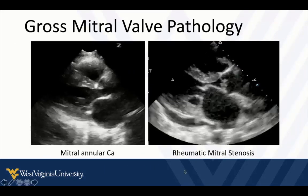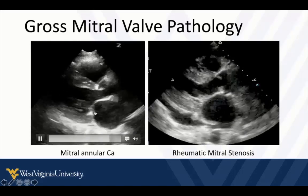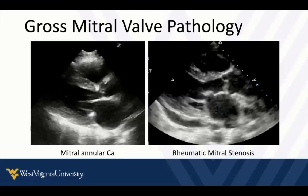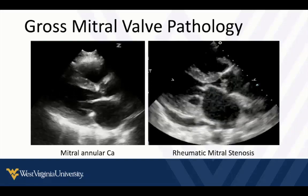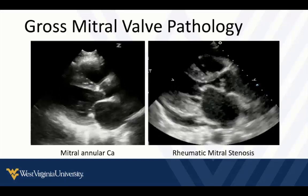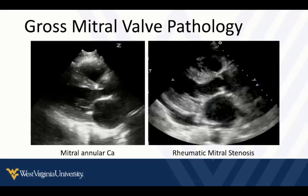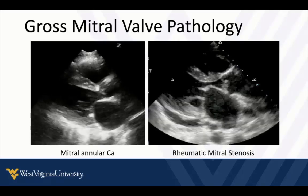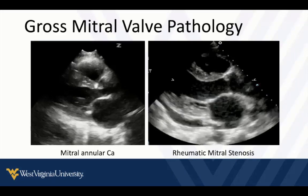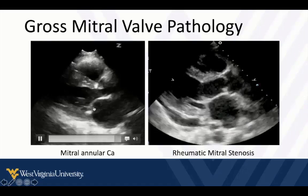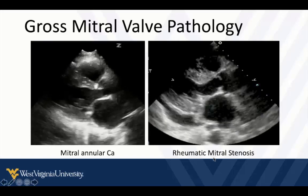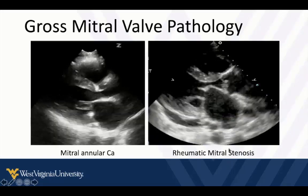Another common finding is mitral annular calcification — calcification around the mitral annulus in many patients. Generally not clinically significant, although aortic and mitral calcification are probably markers of other cardiovascular disease. Seeing calcification of the mitral annulus or the aortic valve might raise your suspicion that the patient has atheromatous changes in the coronaries or aorta. Mitral annular calcification itself is almost never clinically significant.